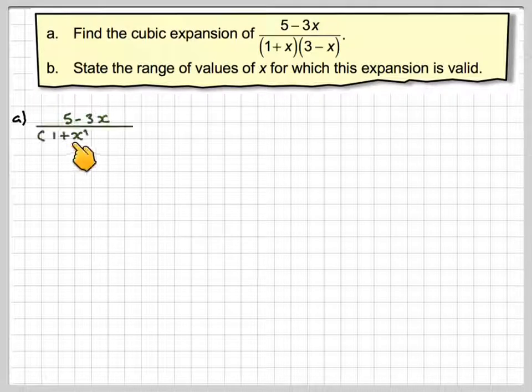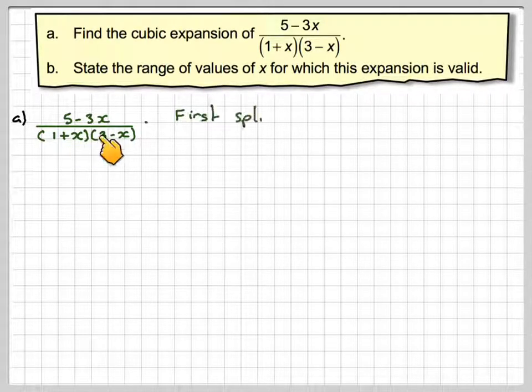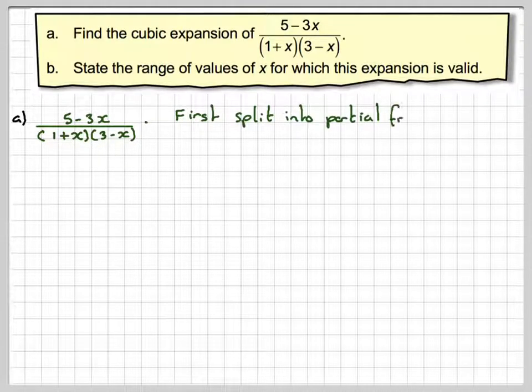So we've got 5 minus 3x over 1 plus x, 3 minus x. Now at first glance this might seem to be quite daunting. However, we can split this up into what's known as partial fractions.